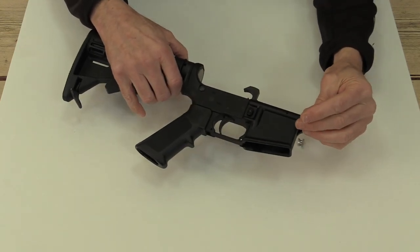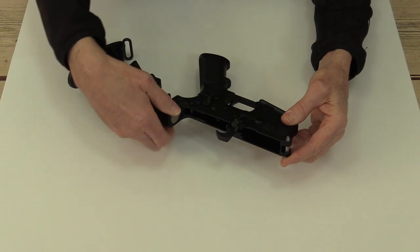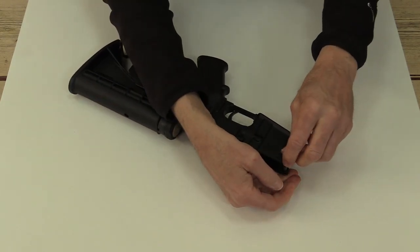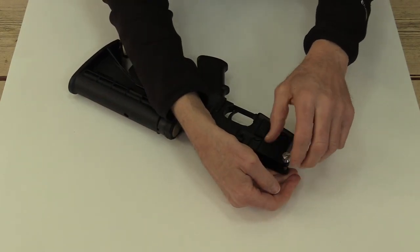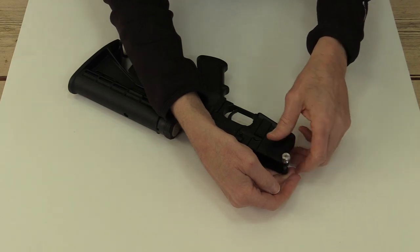It includes both a tamper resistant cone nut that can only be removed by destroying the nut and pin, and a through hole that allows you to install a pin into the hole in the lower receiver.